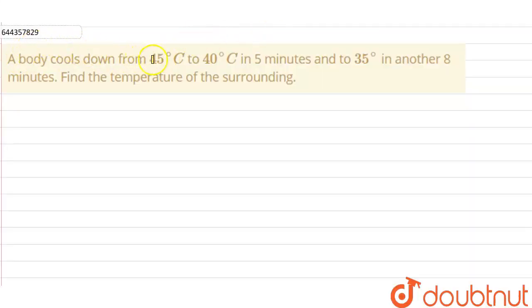Hello everyone. Our question is: a body cools down from 45 degrees Celsius to 40 degrees Celsius in 5 minutes, and to 35 degrees Celsius in another 8 minutes.